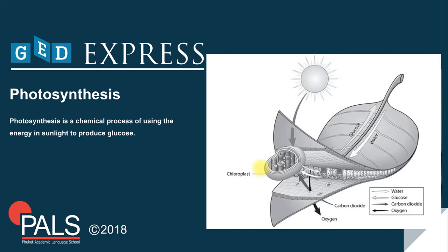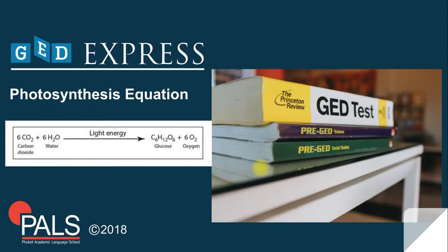The oxygen exits the leaf through the tiny holes. This equation summarizes the photosynthesis reaction. We're going to use this later on the questions that I will present at the end of this lesson.